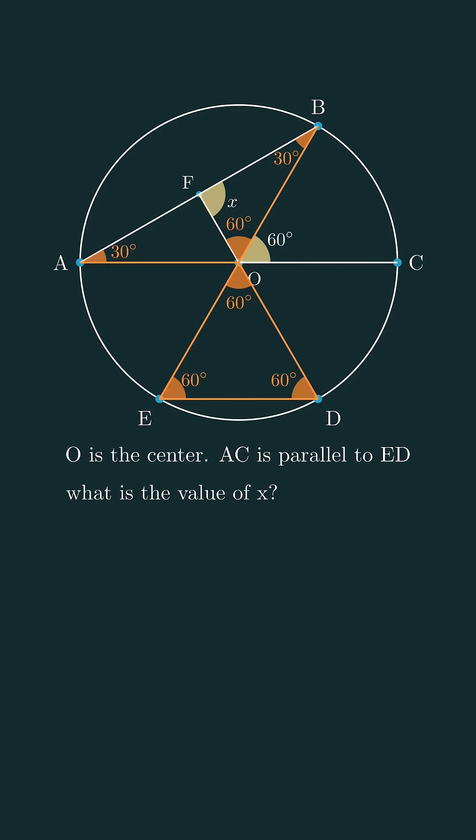Now let's add things up. 60 plus 30 gives us 90. So what's left for angle x? That's right, 90 degrees. The correct answer is option C.